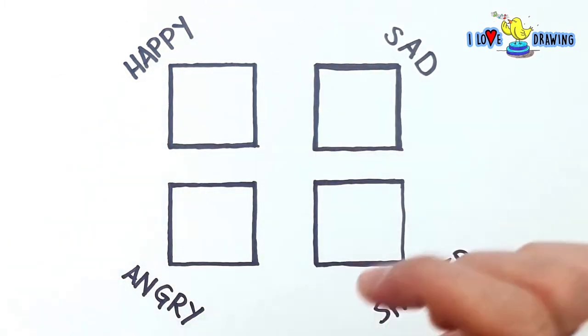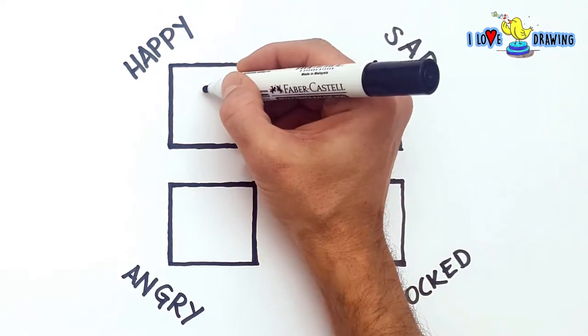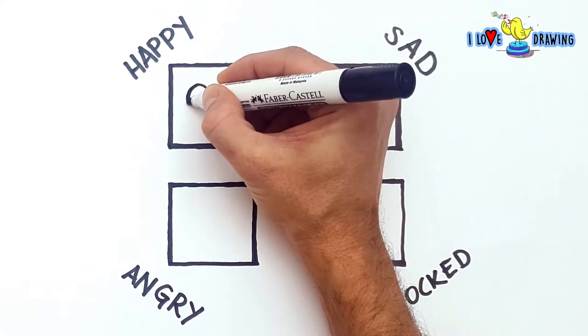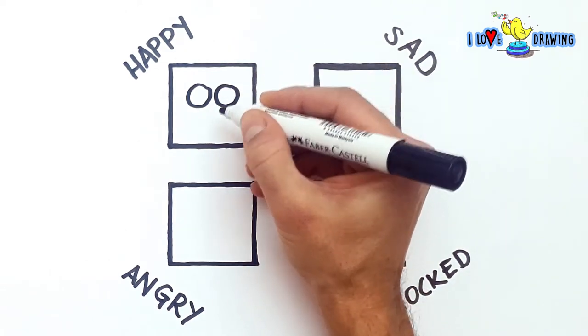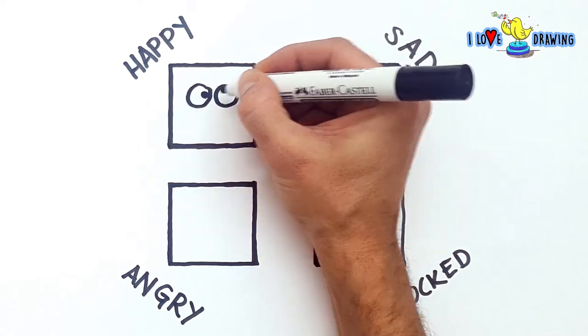Happy. I like to start with drawing the eyes. Because I think our eyes are the key to our feelings. So, I draw two circles for the eyes and then I add the pupils.